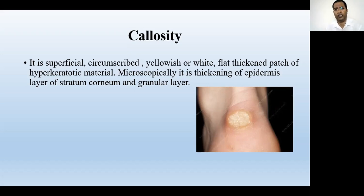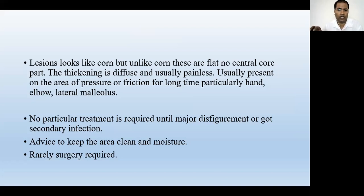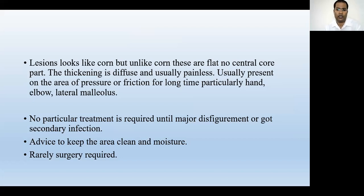If callosity gets secondary infection, suppuration and pus formation may occur, leading to a more severe condition. Usually no particular treatment is required, but if the patient insists, excision of the complete hyperkeratotic material is done. After excision there is a raw area; to fill that raw area, skin grafting may be required — if left as is, healing may be delayed with complications. Excising a large area of callosity may therefore require skin grafting.